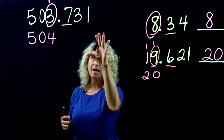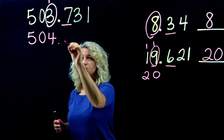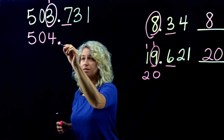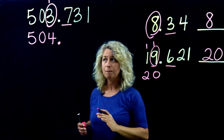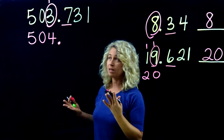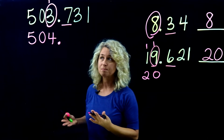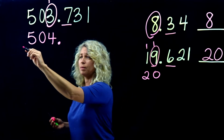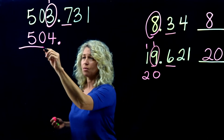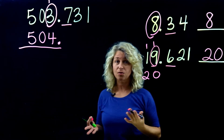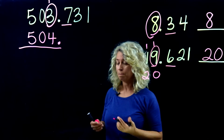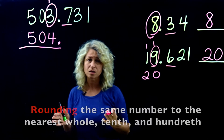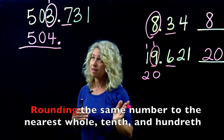Bring the other digits down and stop at that digit because we're rounding to the nearest whole — you don't need to add any additional zeros. You can include the decimal or leave it off. Rounded to the nearest whole number, 503 and 731 thousandths becomes 504.